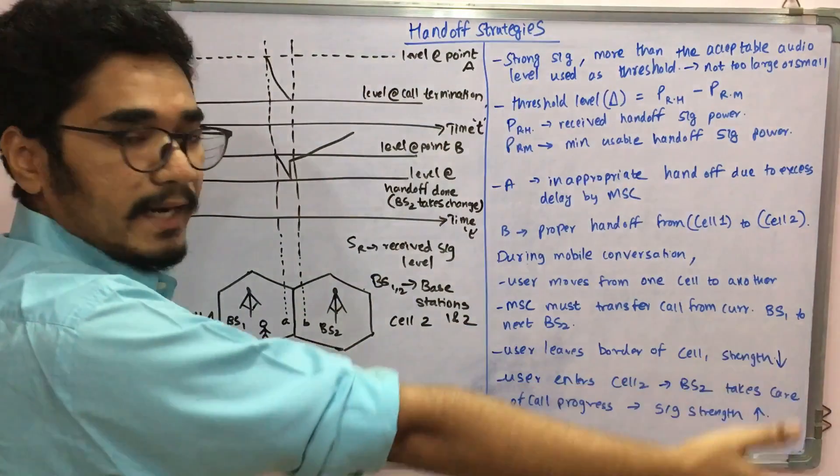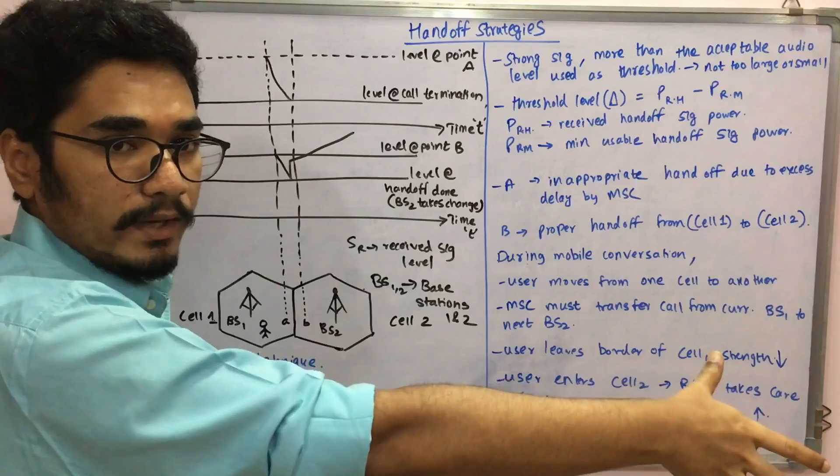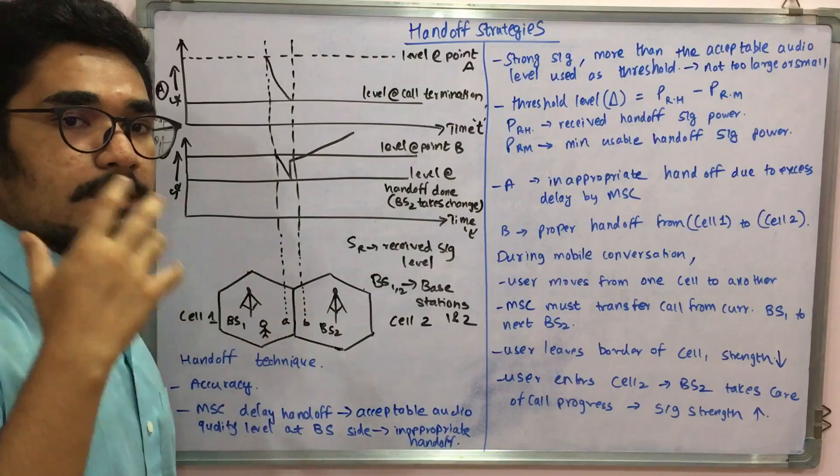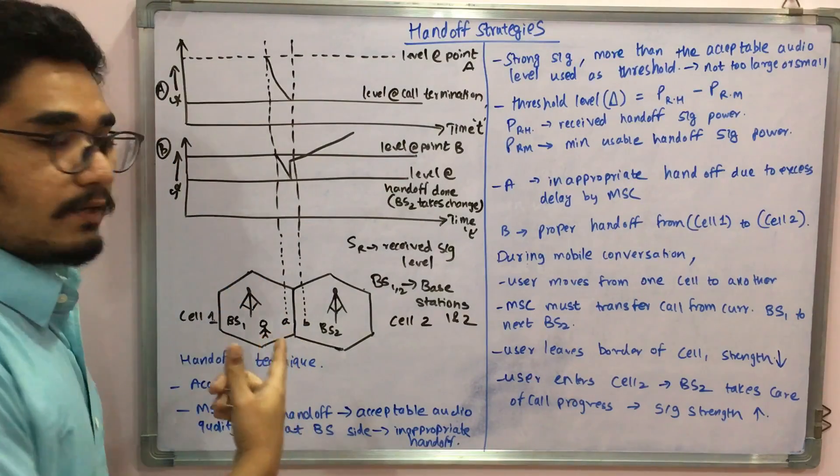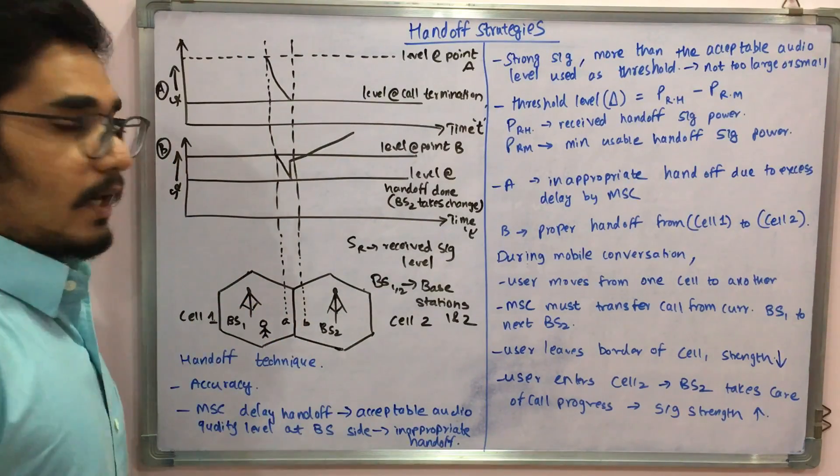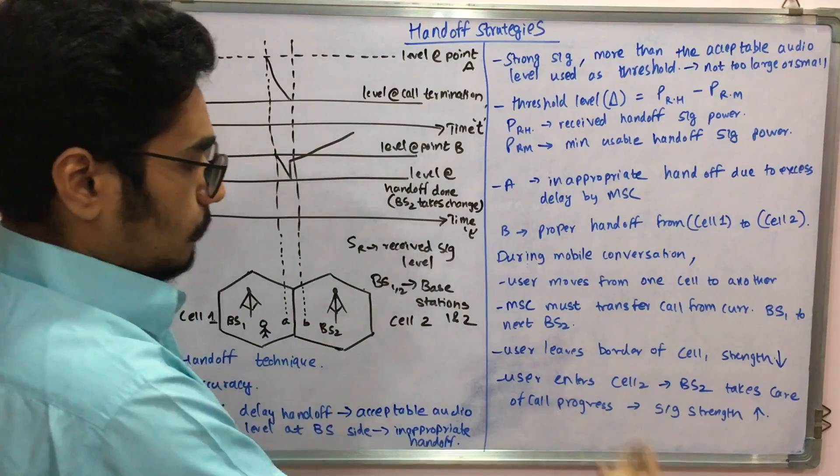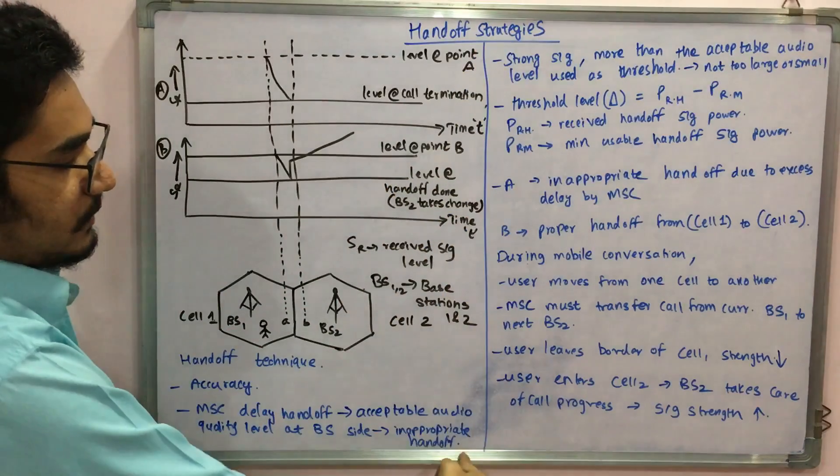When I was standing there, it was cell 1 with base station A. Then when I moved here, I got the proper call or proper reception. That was base station 2 with cell 2. Whenever a user leaves the border, which was actually this line you can see, it's a virtual line you can imagine.